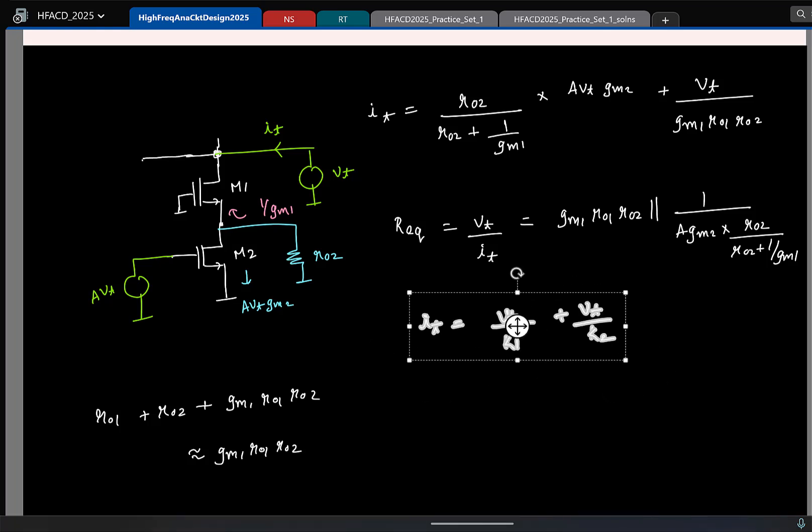Again, for all practical purposes, how can you approximate this? Which one do you think will be larger? Which one do you think will be smaller? I have two terms. Which resistance do you think will be larger? Left one. Why? I mean, I already have R naught. That R naught is getting multiplied by intrinsic gain. This is significantly larger than what I have here. Here I have 1 by GM, and not even 1 by GM. I have 1 by A times GM. So how can I approximate this now? I have two resistances: a very large resistance and a very small resistance. So what will this be approximately equal to? 1 by A GM2.